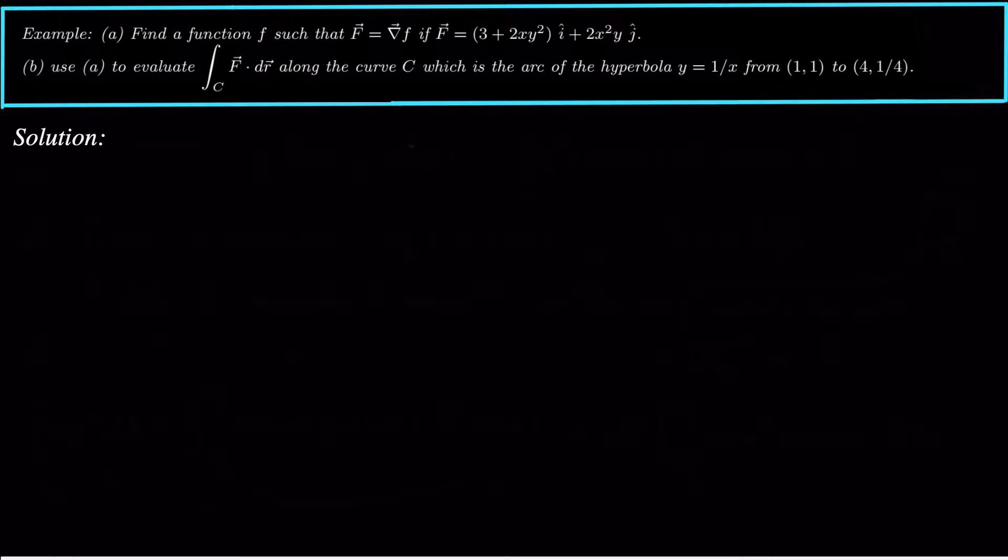So the first part of this problem says find a function f such that the field F, capital F, is equal to the gradient of little f. So the field here is 3 plus 2xy squared i plus 2x squared yj. And we want to find a function such that the gradient of that function little f is equal to the field capital F.